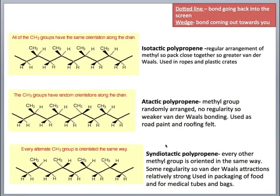The last type is syndiotactic polypropene, where every other methyl group is oriented in the same way — methyl group out, then back, then out, then back — alternating regularly. This small degree of regularity means the van der Waals interactions are relatively strong. Syndiotactic polypropene is used in packaging of food and also for medical tubes and bagging.